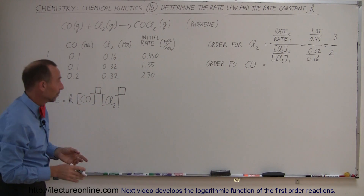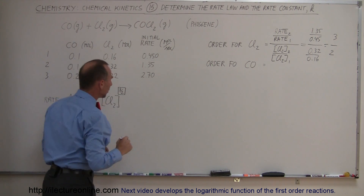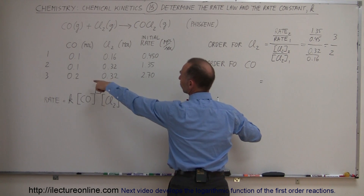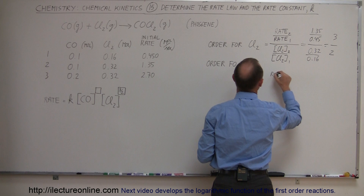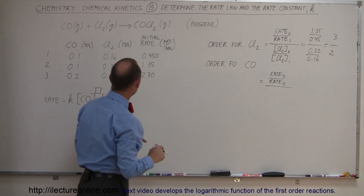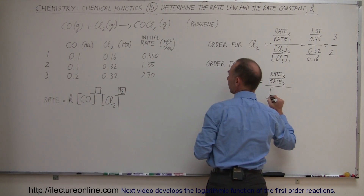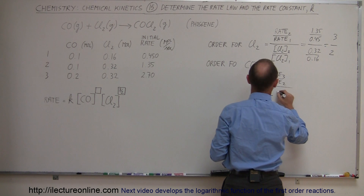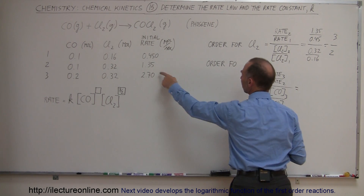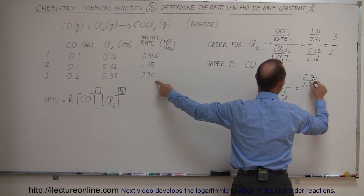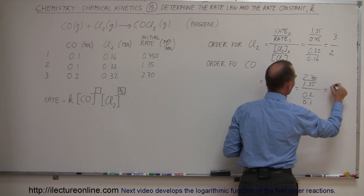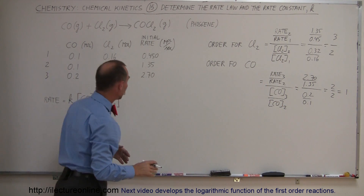Here's an example where the order doesn't always have to be an integer — for chlorine gas, the order is 3/2. We do the same for carbon monoxide. We go rate 3 to rate 2, showing the ratio of the rates, and then the ratio of the CO concentrations: CO experiment 3 divided by CO experiment 2. The rate went from 1.35 to 2.7, so 2.7 divided by 1.35. The concentration ratio is 0.2 divided by 0.1, which is 2 to 2, or 1. So the order for carbon monoxide is 1.